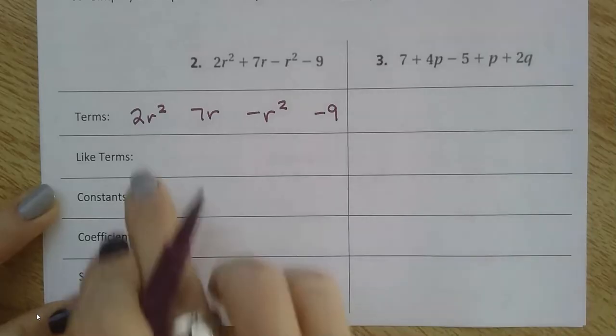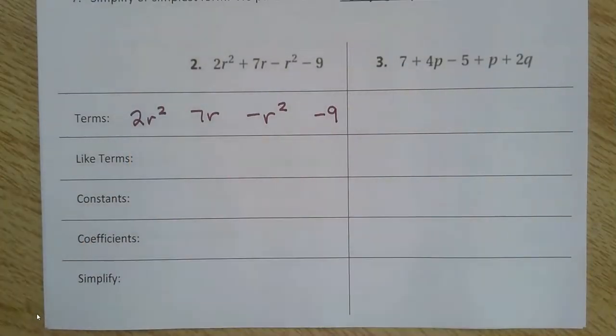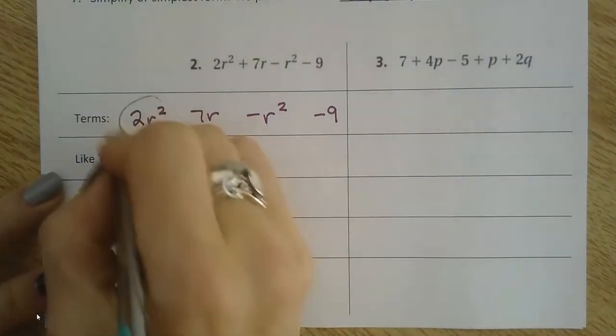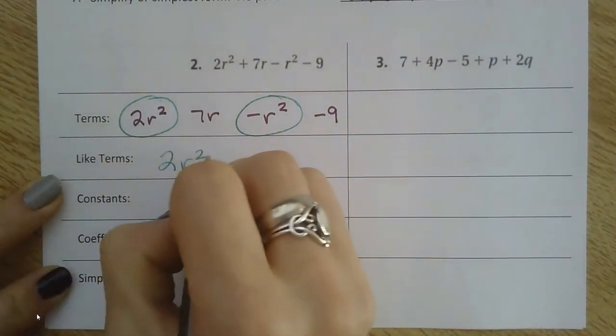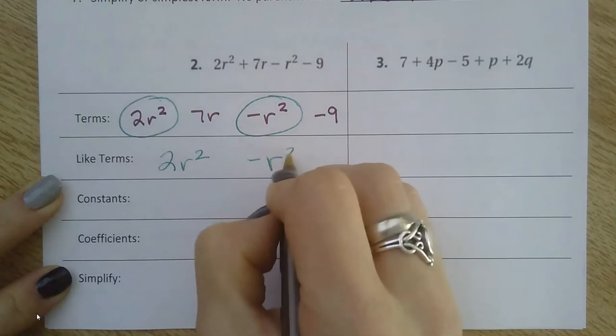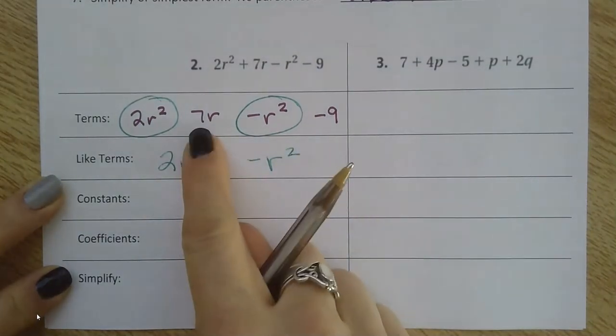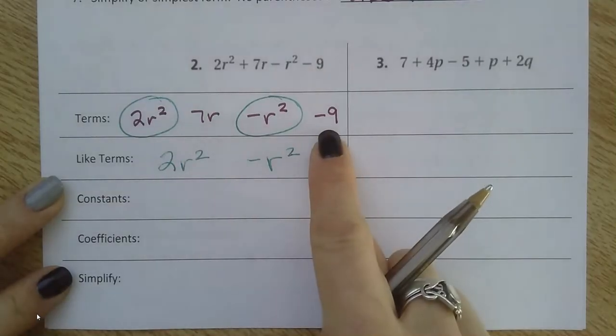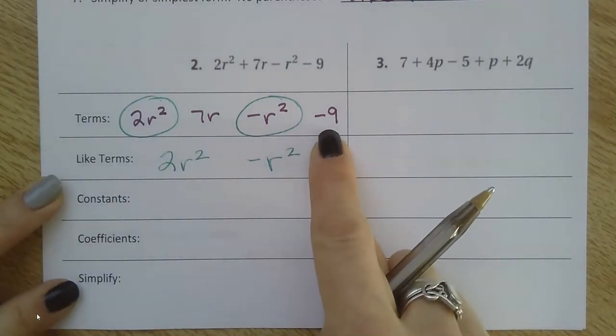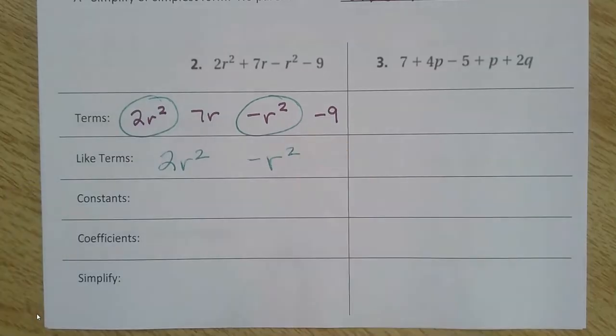The like terms - the same variable to the same power - would be these, the r squareds. I have 2r squared and negative r squared. That's the only like terms I have in here. The 7r doesn't have anything that goes with it, no like term. And the constant doesn't have anything with it, no like term.